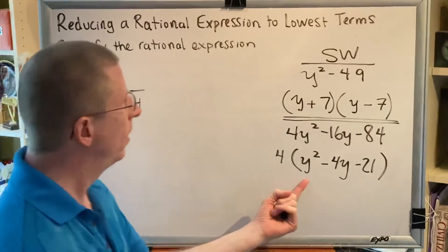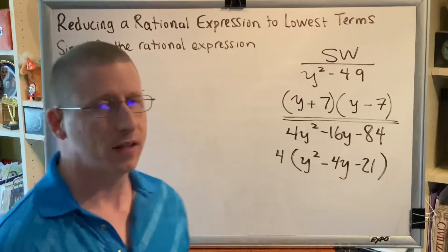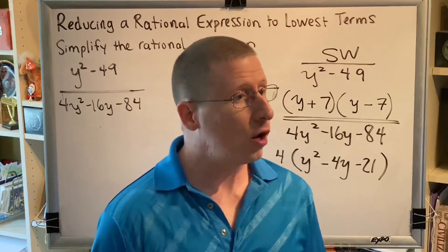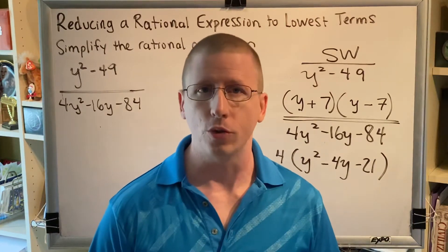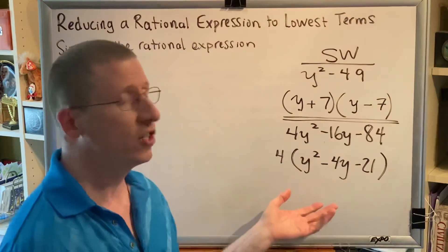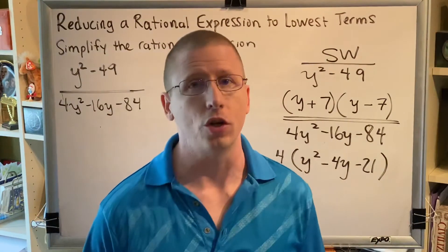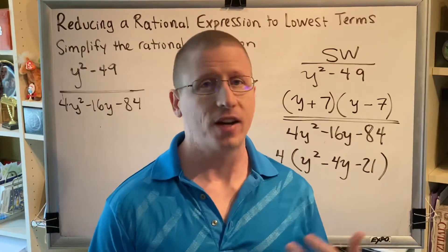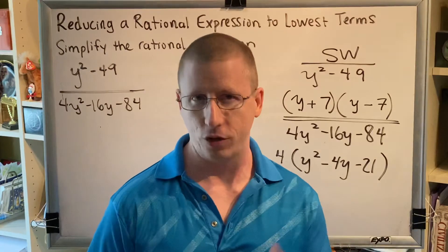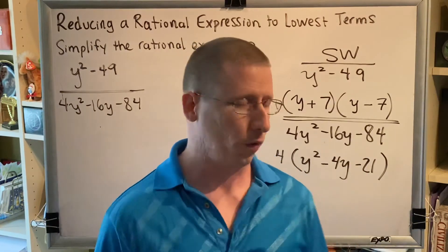Step three of factoring. Count your terms. I see three terms, which makes this a trinomial. And there are a variety of methods that you can use for trinomials. You can use the educated guess and check method. You can use the AC method. You can use happy face, x-factor, necklace. There are so many methods. I'm assuming that you've heard of at least one of those.